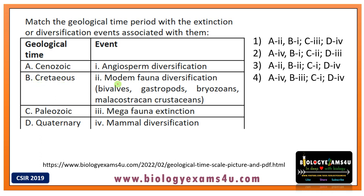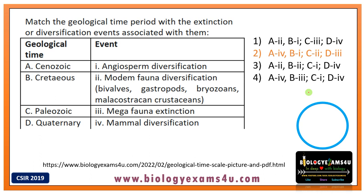The geological events to match are: angiosperm diversification to the Cretaceous; modern fauna diversification to the Paleozoic; megafauna extinction to the Quaternary period; mammal diversification to the Cenozoic. I know that the Cretaceous is a period of angiosperm diversification, giving me a 50-50 chance between first and second options. I also know the Cenozoic is the most recent era, so mammals — which originated relatively recently — link to mammal diversification, narrowing the answer to the correct option.